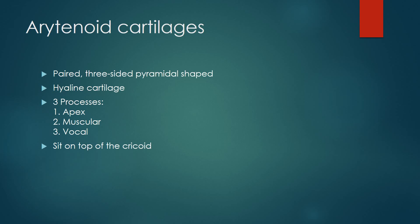The arytenoid cartilages are paired, three-sided pyramidal-shaped hyaline cartilages with three processes. Superiorly we have the apex, on which the corniculate cartilages sit. Laterally we have the muscular processes onto which muscles attach, and posteriorly we have the vocal process onto which the vocal ligament attaches. The arytenoids sit on top of the cricoid, working as a sliding or gliding window mechanism.